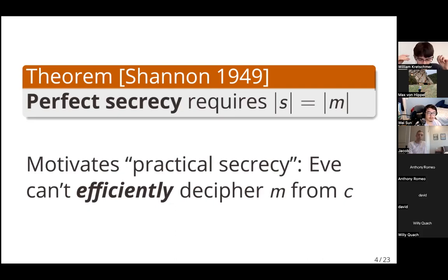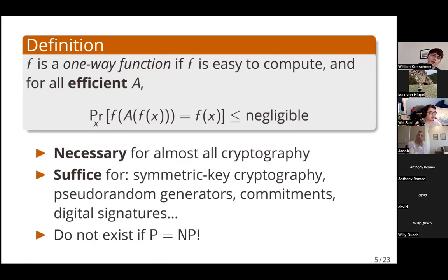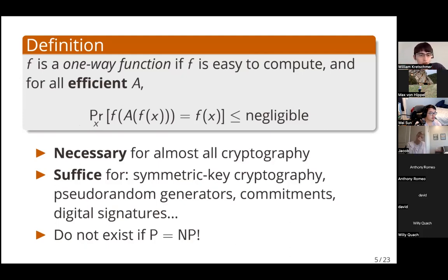I want to give you a brief overview of how these kinds of computational proofs of security tend to operate. I'm going to do that by introducing you to arguably the single most basic primitive in all of cryptography, which is something known as a one-way function. Intuitively, a one-way function is something that is easy to compute — you can compute it forward — but it is hard to invert. Hard to invert in the sense that for any efficient adversary A, if I choose a random input x and feed f(x) to A, then A should not be able to find an output y such that f(y) equals f(x).